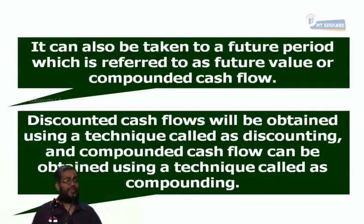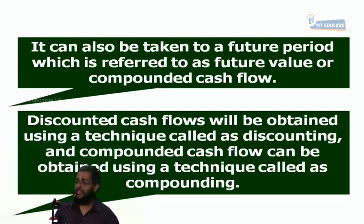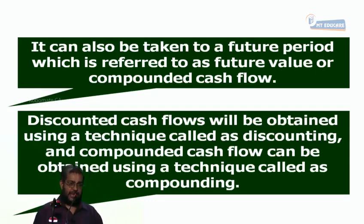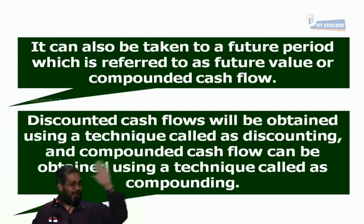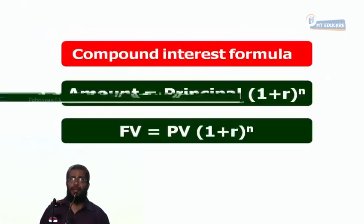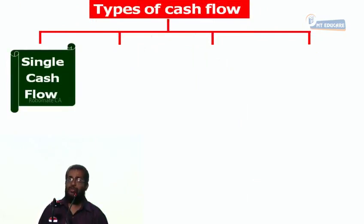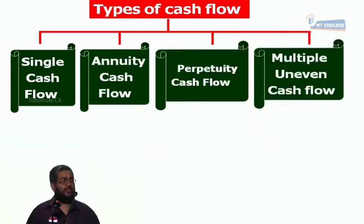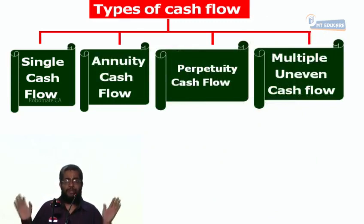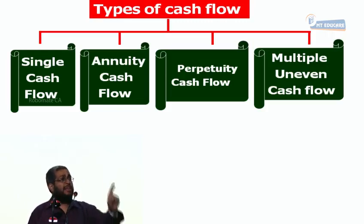Cash flows can be in different patterns — there are four types of cash flow streams seen in most problems and market instruments. The four types are: single cash flow, annuity cash flow, perpetuity cash flow, and multiple uneven cash flow. If a cash flow occurs only once, I call it a single cash flow — for example, an FD deposit gives one maturity value at the end of year 5.